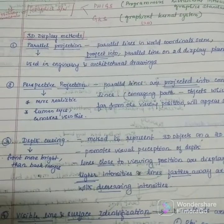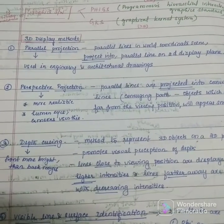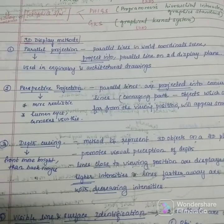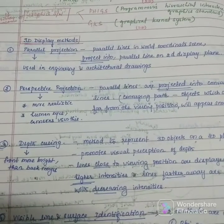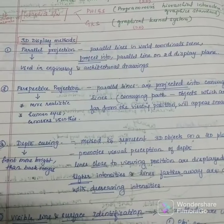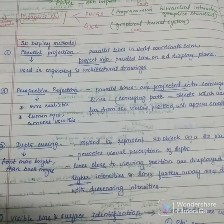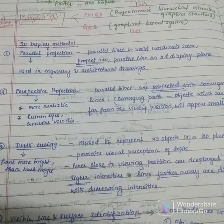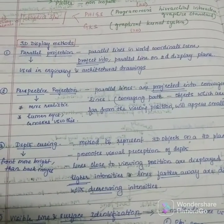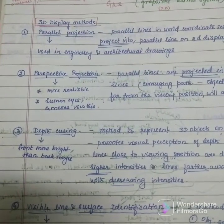Students, in this lecture we will be seeing about 3-dimensional display methods. 3D computer graphics utilize 3-dimensional representation of geometric data. We need a coordinate reference to define the position and orientation for a plane. This 3D display method is of 6 types.